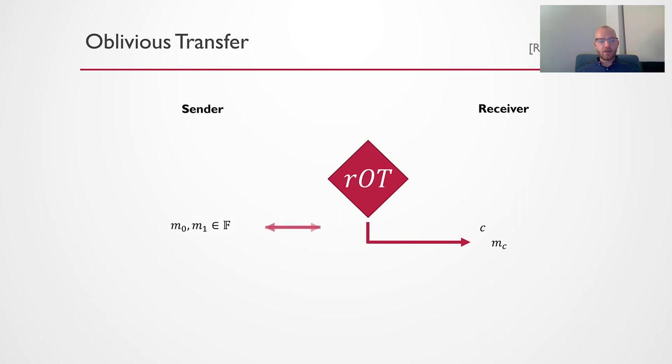There's also a variant of Oblivious Transfer known as Random Oblivious Transfer. Here, the parties don't exactly have inputs. Instead, the functionality or the protocol chooses everything at random. So the M0 and M1 is random, and the choice bit C is random. Otherwise, the protocol is roughly the same. The nice thing about random OTs is that you can de-randomize them and get back to the original OT correlation. So in some sense, random OT is all that you need.